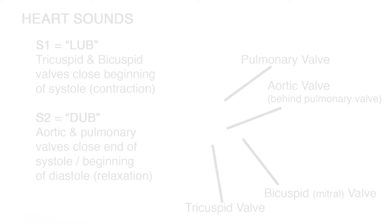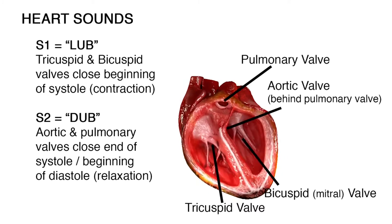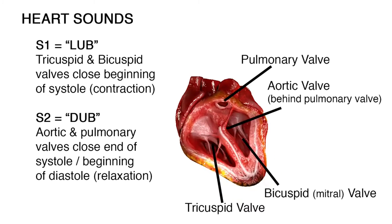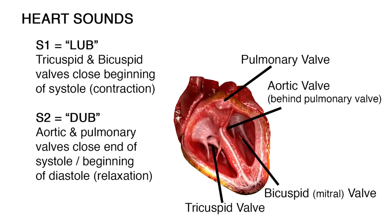Next we'll take a look at the heart sounds heard with a stethoscope. As blood flows from the atria to the ventricles, it passes through the tricuspid and bicuspid valves, also known as the atrioventricular or AV valves. These valves then snap shut, making the first heart sound, S1, or 'lub' in lub-dub.